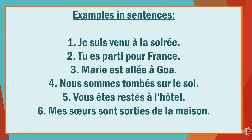Let's look at some examples of sentences where the passé composé has been conjugated with être: je suis venu à la soirée (I came to the party), tu es partie pour la France (you left for France), Marie est allée à Goa (Marie went to Goa), nous sommes tombés sur le sol (we fell on the floor), vous êtes restés à l'hôtel (you stayed at the hotel).